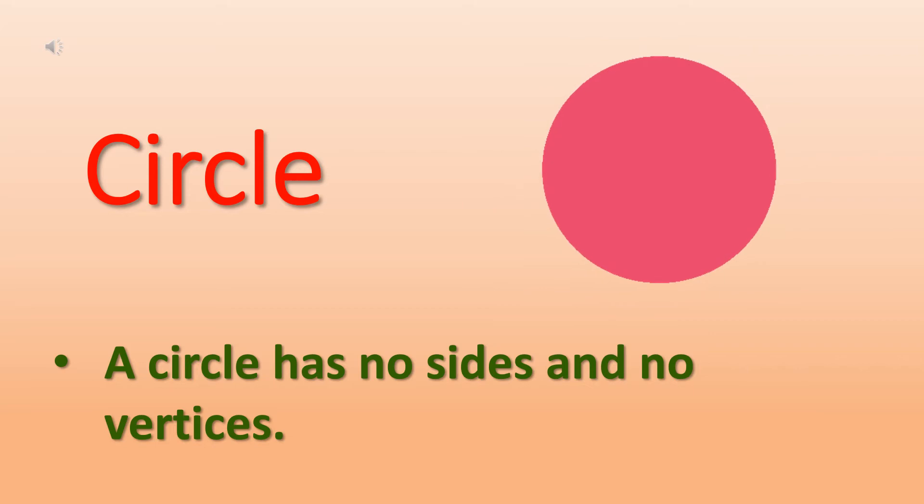Our next shape is circle. As you can see, circle has no sides and no vertices. It's just a round shape. Gol-gol hoti hain circle. Toh na uski koi side hoti hain, na uske koi vertices or corners hoti hain.